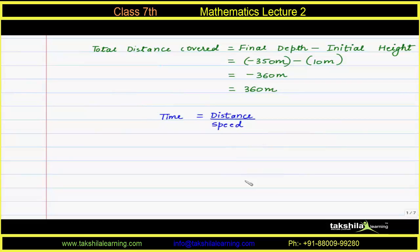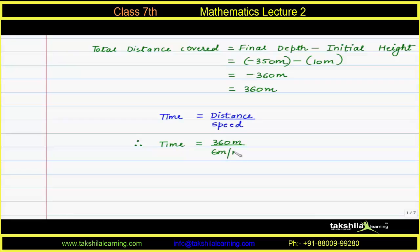Using the formula: time = distance ÷ speed. Time = 360 meters ÷ 6 meters per minute = 60 minutes. So the elevator will take 60 minutes to reach the depth of 350 meters below ground.